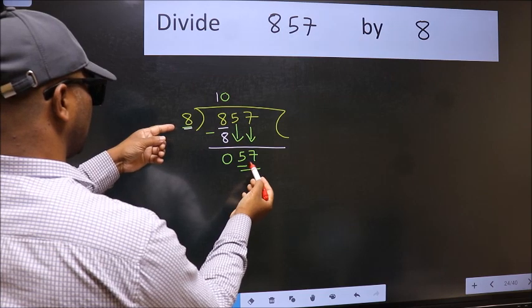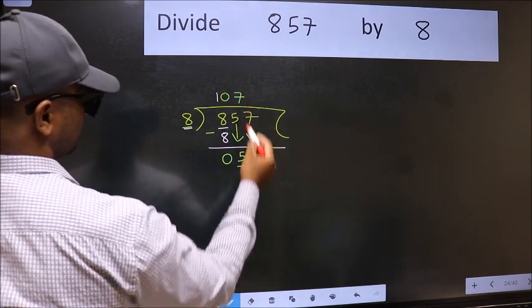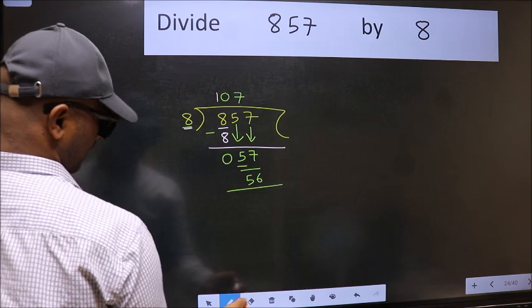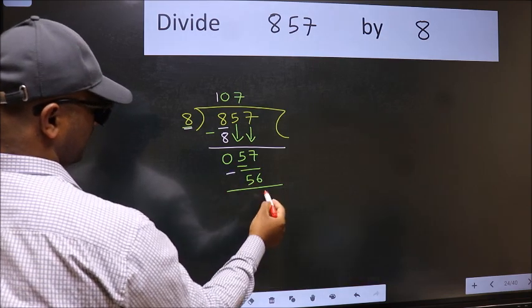A number close to 57 in the 8 table is 8 times 7, which is 56. Now we should subtract. We get 1.